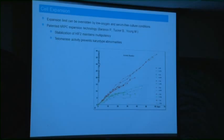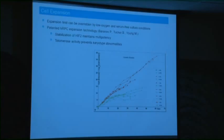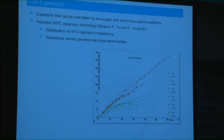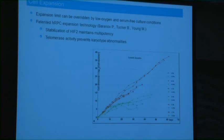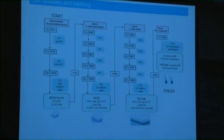One challenge has been growing enough cells to characterize and transplant. Under typical incubator conditions, senescence occurs after about 45 days — not enough cells are generated. Work by Marie Cheta on other stem cells showed that low oxygen — 3-5% — leads to increased pluripotency and proliferative capacity. We can now grow these cells for long periods without them changing or senescing, up to 20 passages, giving us trillions of cells.